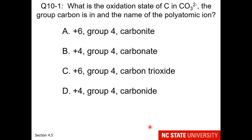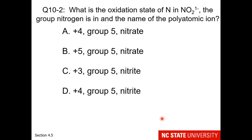Please try this exercise with carbon in CO3 2−: give the oxidation state, noting that carbon is in group 4, and choose the appropriate name. Then try the same for nitrogen in NO3 1−: find the oxidation state, noting nitrogen is in group 5, and choose the appropriate name.